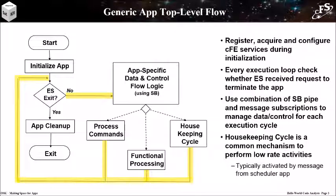There are many ways to manage an app's control flow, represented with a function block that has optional exit points. The example app simply pends indefinitely on its command pipe. A common design pattern is to define a housekeeping cycle that typically runs every three to five seconds. A request housekeeping message is defined by the scheduler app and sent to the app to initiate housekeeping processing. In addition to sending a housekeeping status telemetry packet, this background cycle is useful for things like checking for new tables.